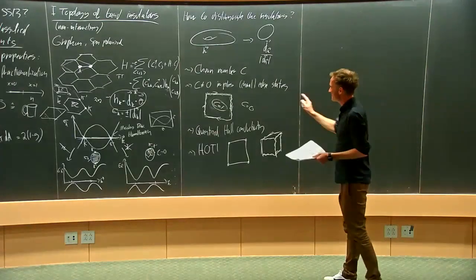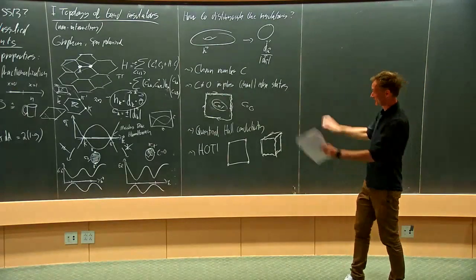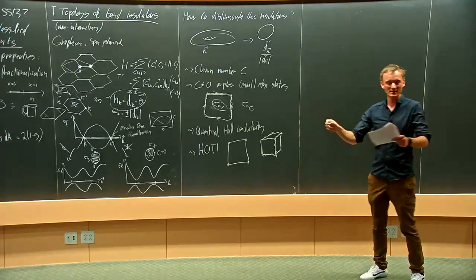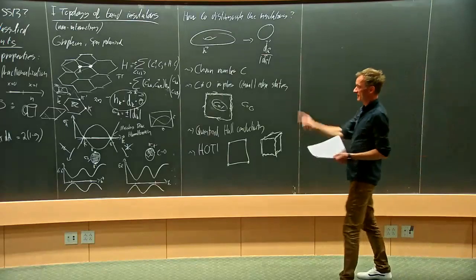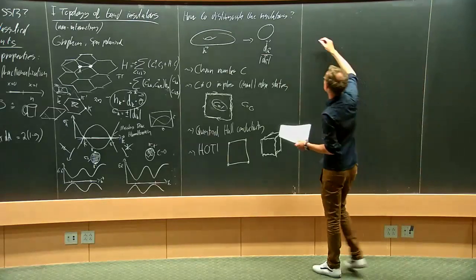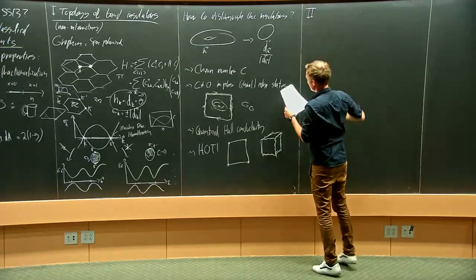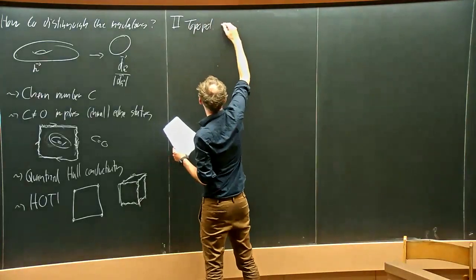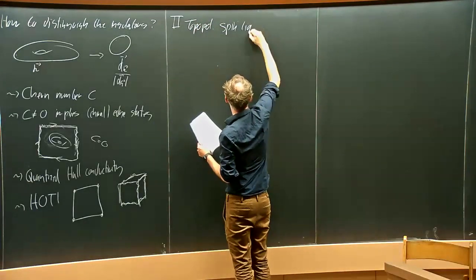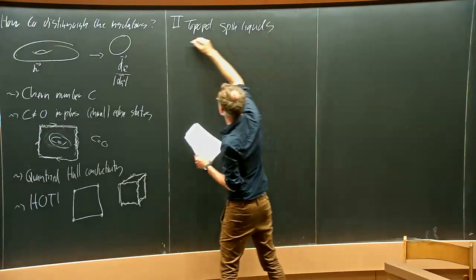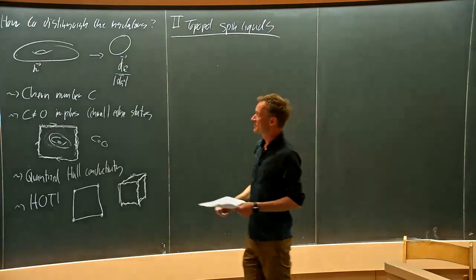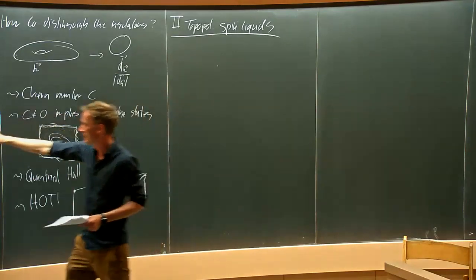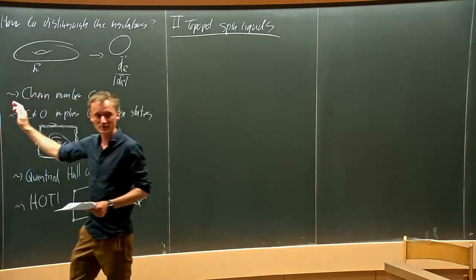With about 10 minutes remaining, let me briefly come to the second part. The first part was about understanding the physics of a single electron in a periodic lattice. Now I want to jump to the full many-body problem. What I want to look at are so-called topological spin liquids.